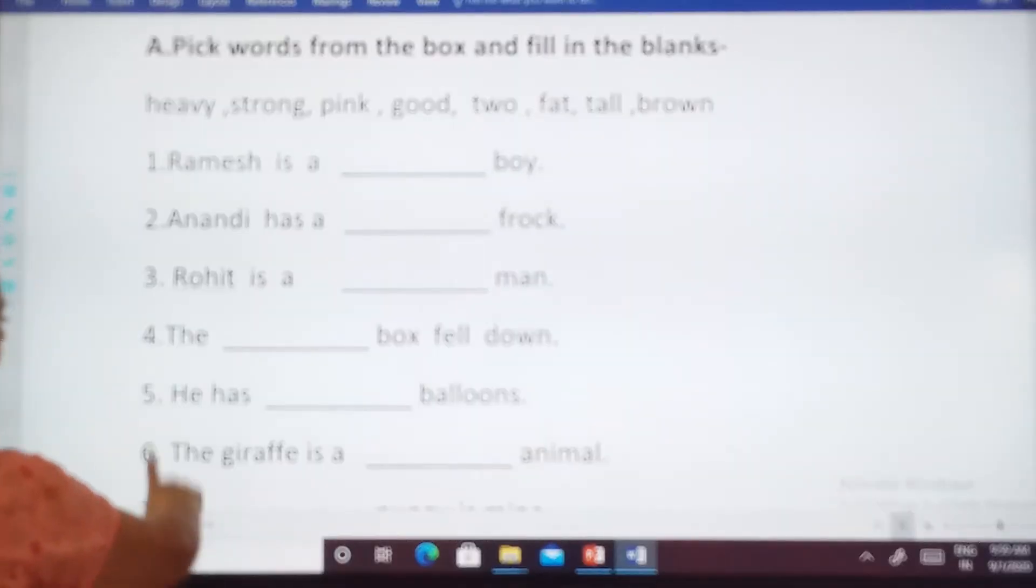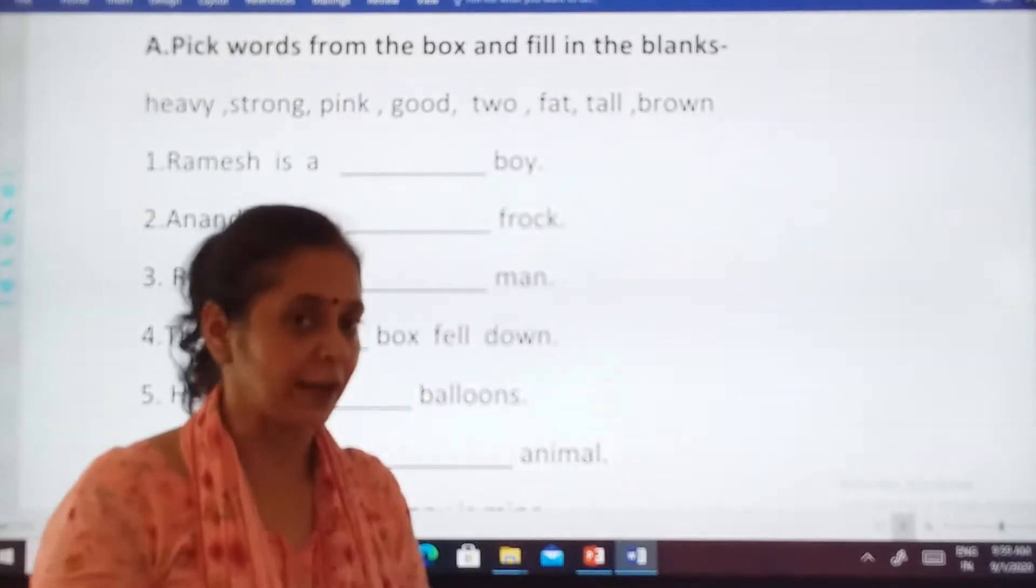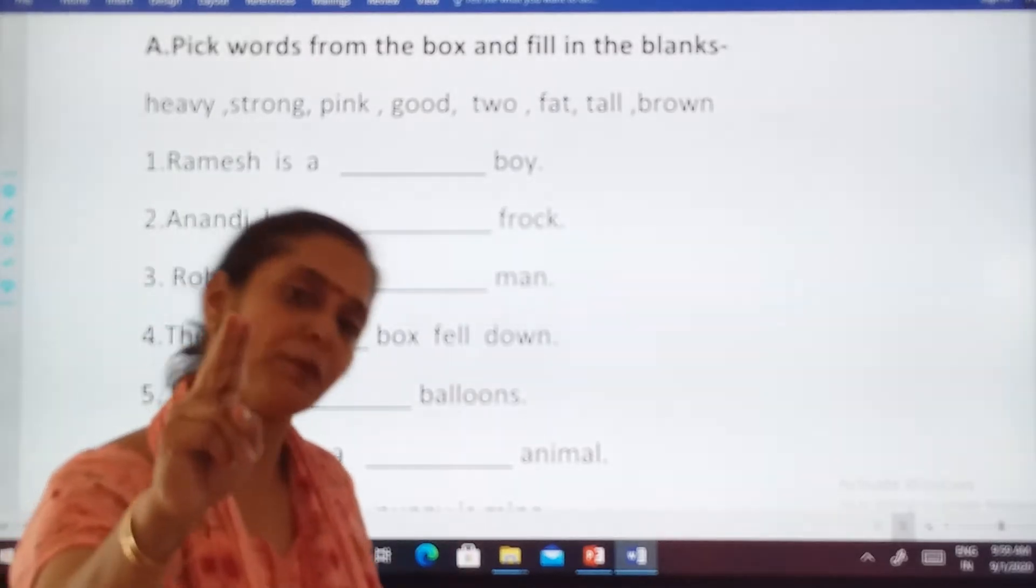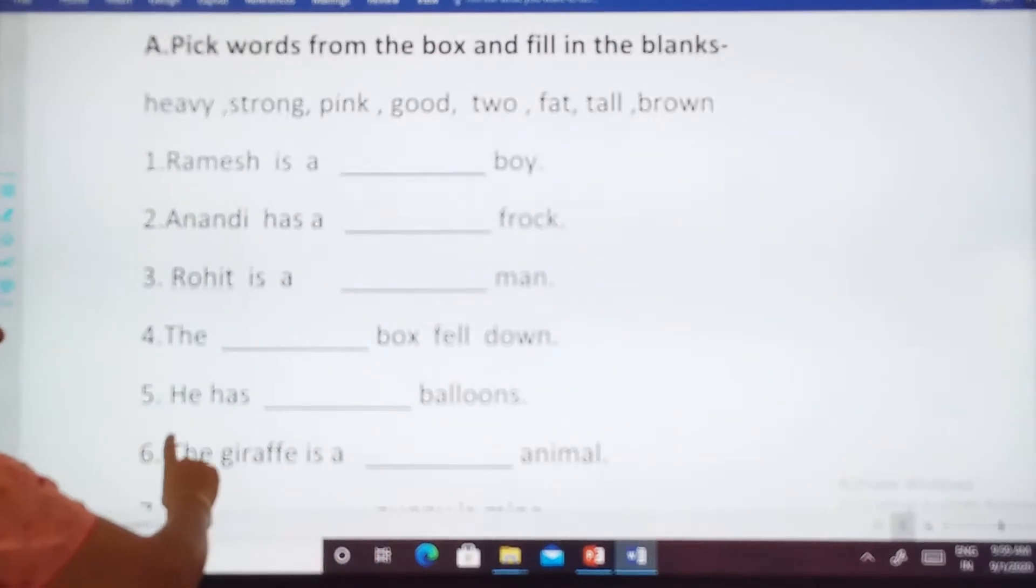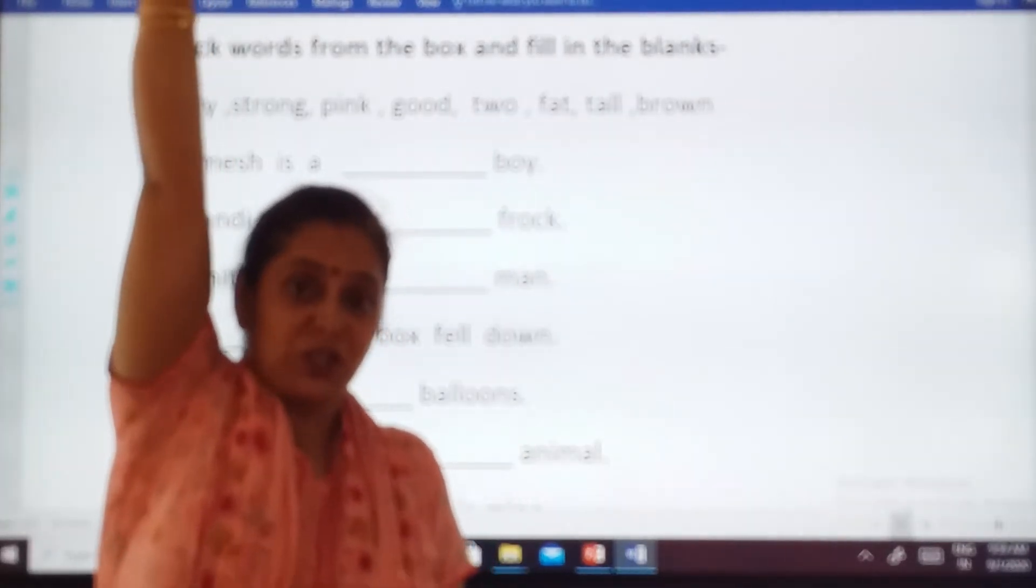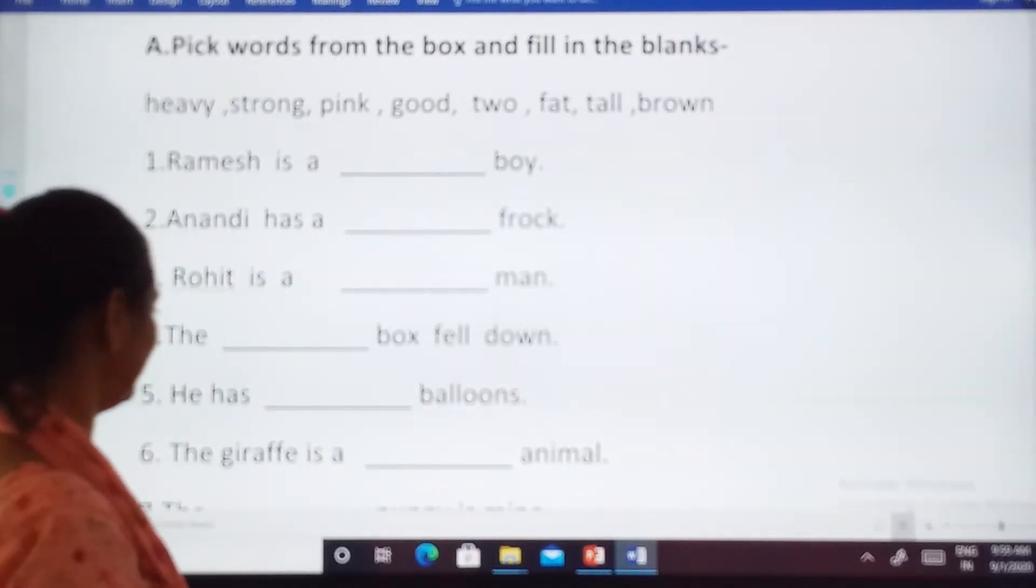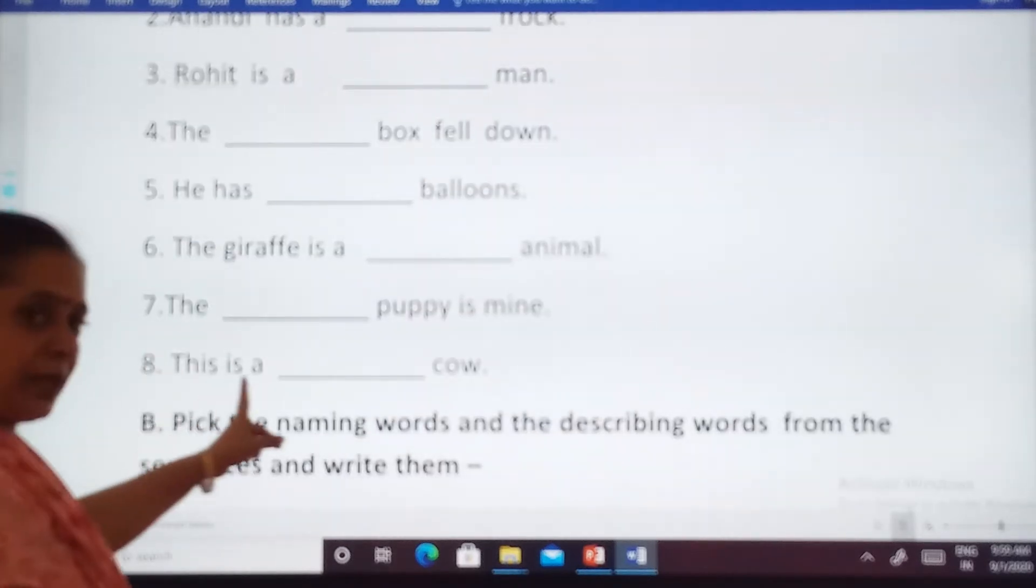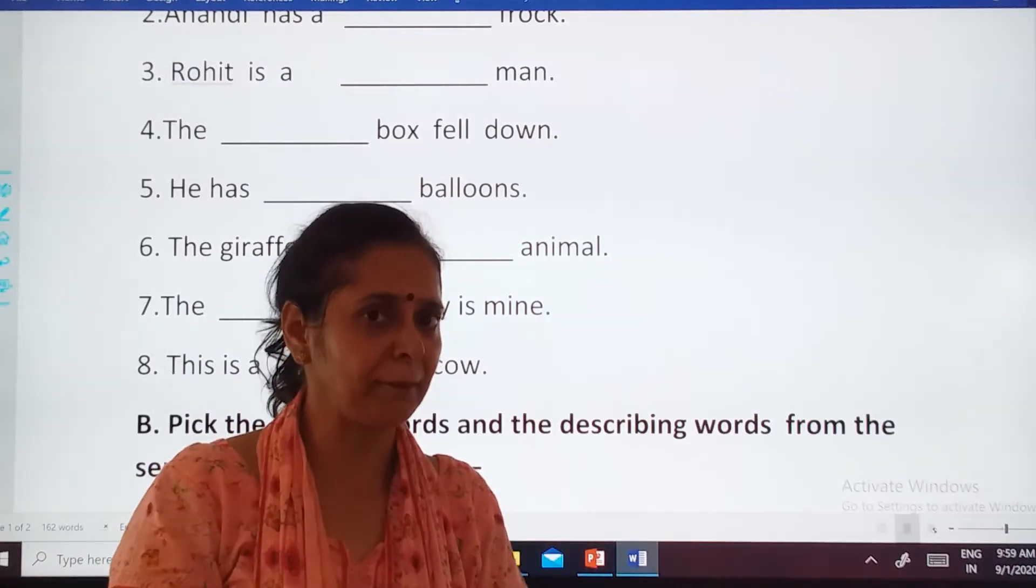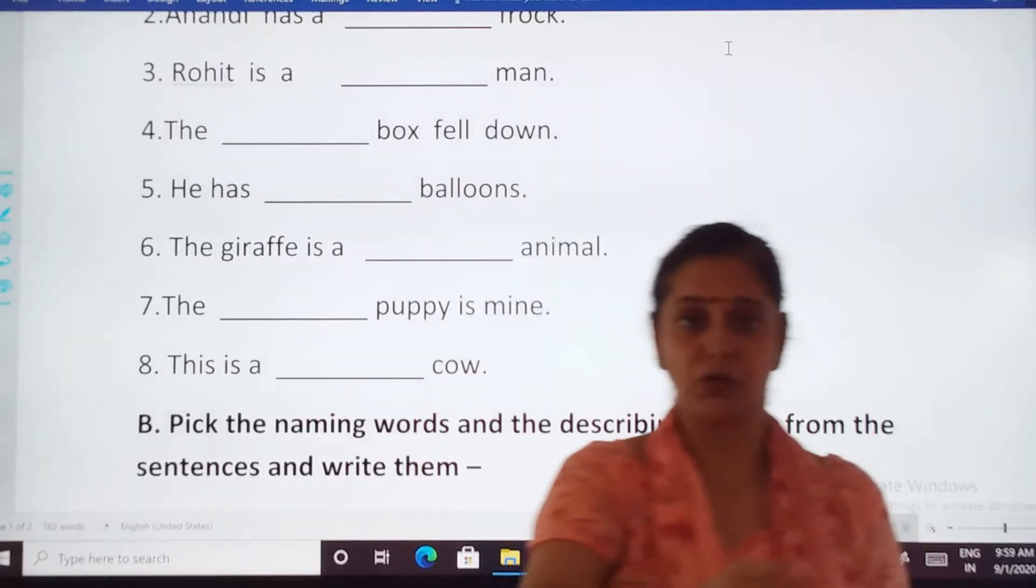Okay. Yes. Very smart children. He has dash bulks. Kisne bulks? Have you seen the video also no? There were two bulks. So, he has two bulks. The giraffe is a dash animal. Giraffe dekha hai na? Zumi. Kaisa hota hai? Tall, tall hai na? So, giraffe is a tall animal. Yes. So, this you will be able to do. This is a brown cow. Picture dekha hai na aap ne? Text book me. This is a brown cow.